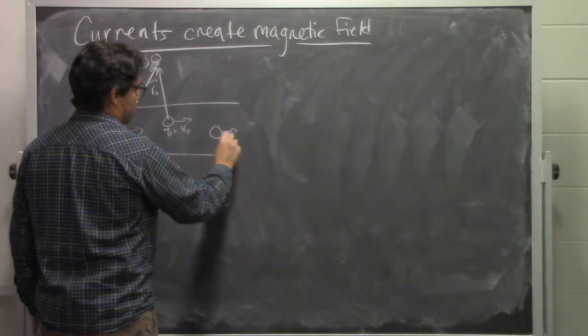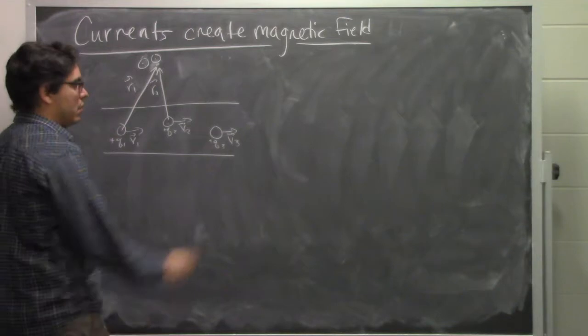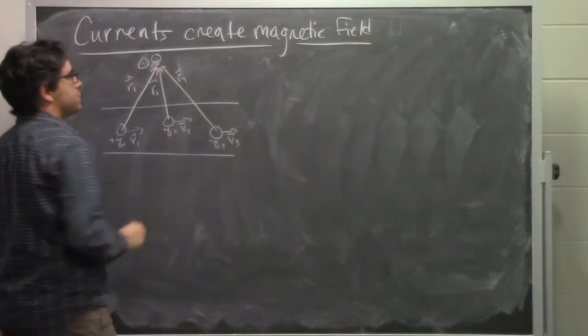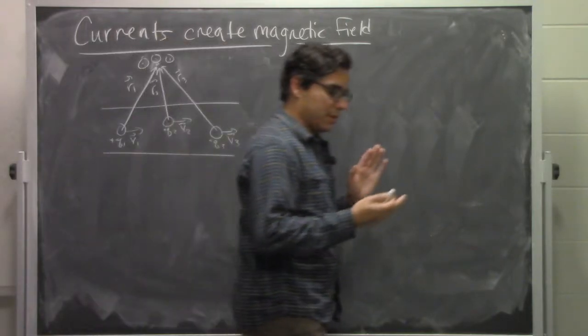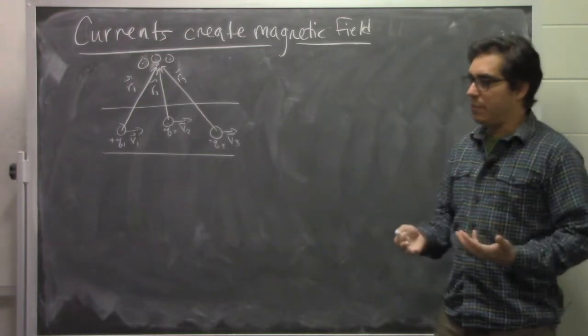Third charge V3 has a positive Q3, has a relative position vector R3, and it produces a magnetic field that points out of the board. Now all those drawings that I just made here should all lie on the same point. They all add up to give you the net magnetic field.